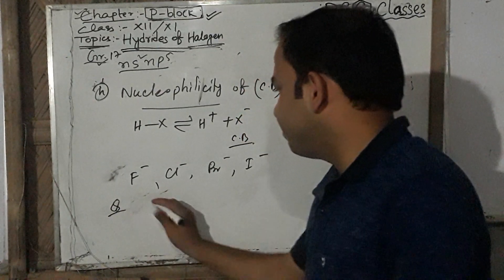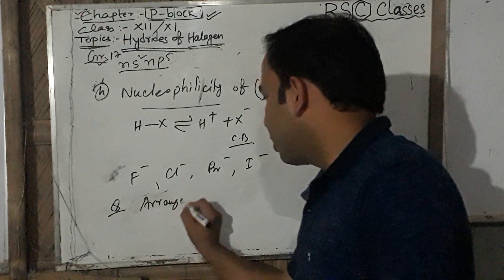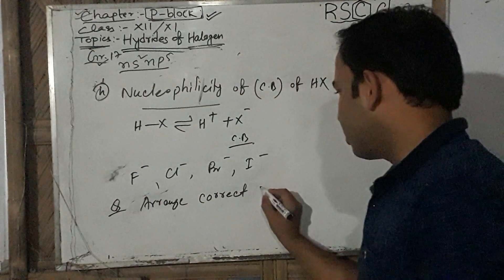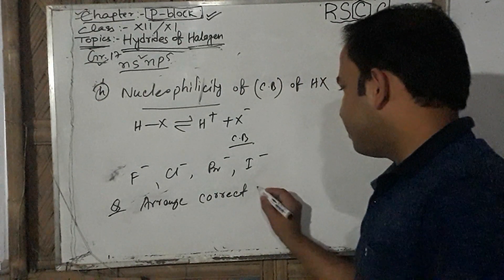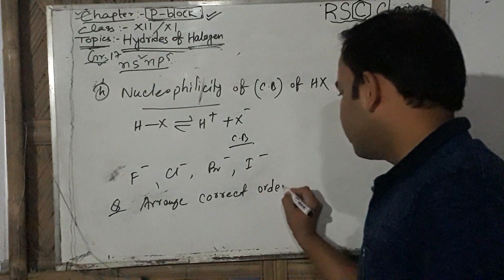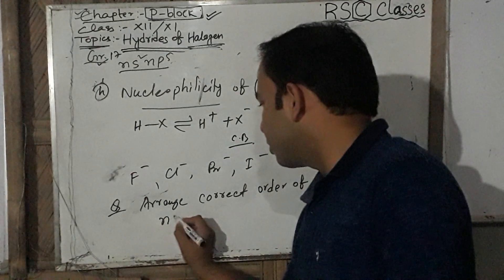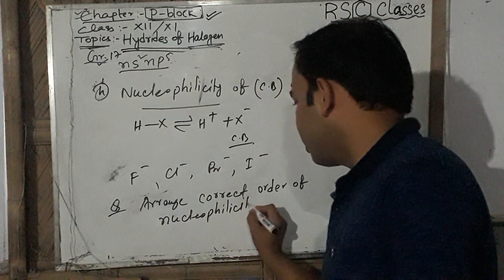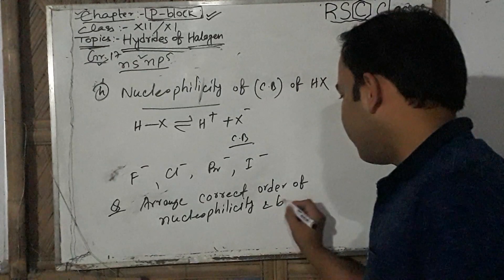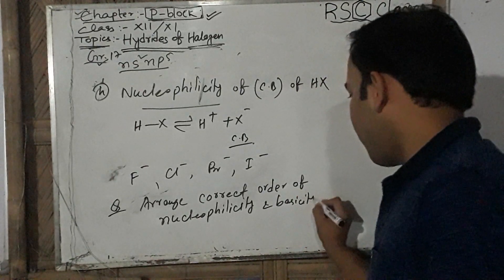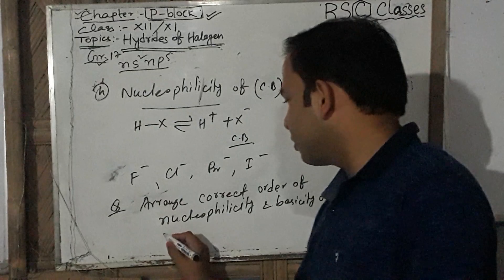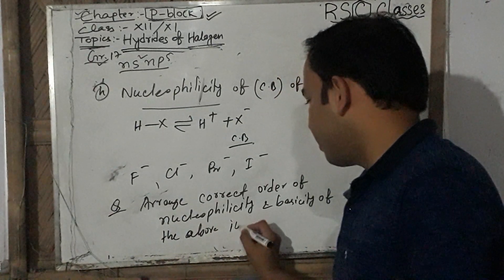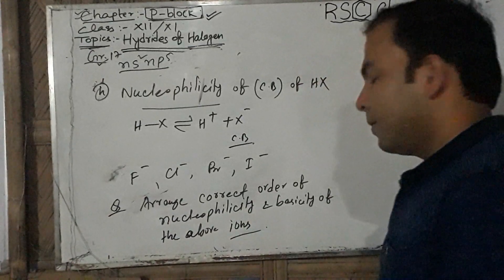Arrange the correct order of nucleophilicity and basicity of the conjugate bases F⁻, Cl⁻, Br⁻, and I⁻. This is left as a question for the students to answer. Thank you.